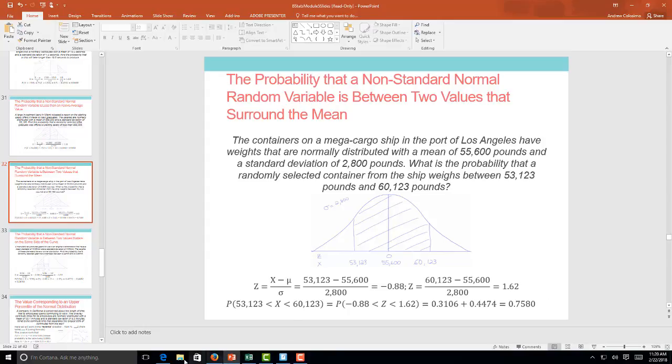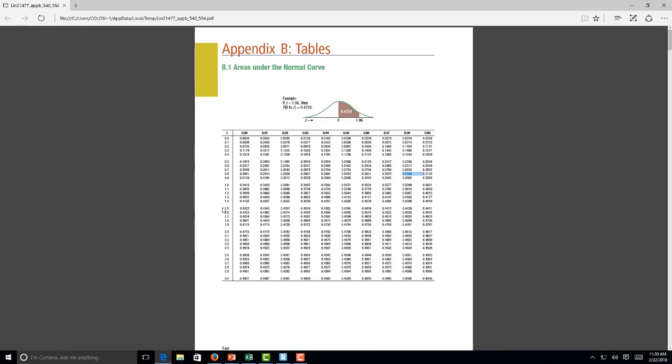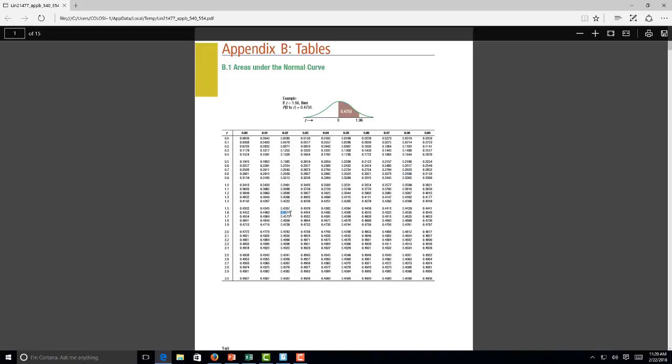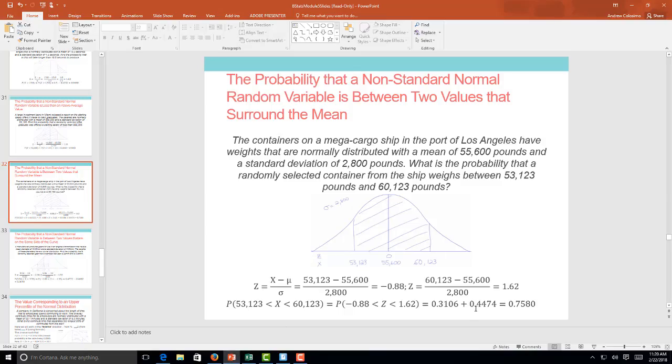Now if we go to 1.62, so we go to 1.6 and we go to 2, and we have a probability of 0.4474. So 0.4474 is the probability from the mean to this point. So if we want to know the probability from this point to this point, we're going to add those two probabilities together. The two probabilities added together, we have a probability of 0.7580, which is the probability that a randomly selected container from the ship weighs between this value and this value.